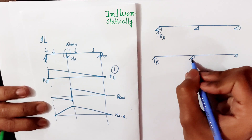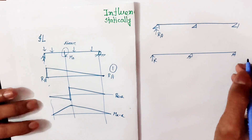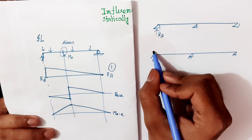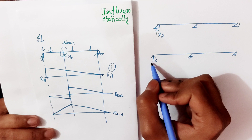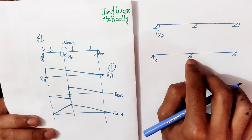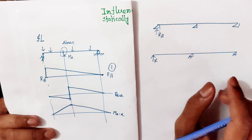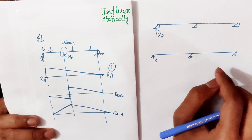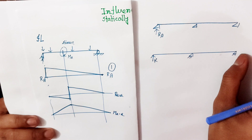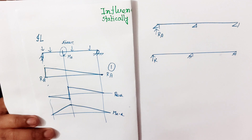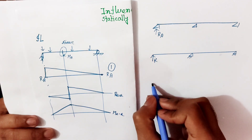Now we have a conjugate beam. After the frame, we have a fixed internal link, an internal hinge, and an outer link.